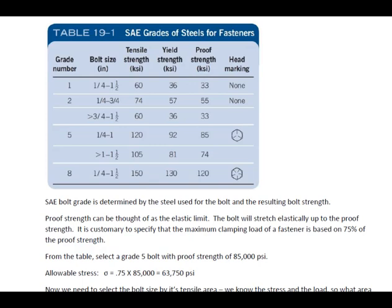So what we're going to do for this problem is, let's go ahead and select a grade 5 bolt, which gives us a proof strength of 85,000 psi. So our allowable stress is going to be 75% of that 85,000, or in this case, 63,750 psi.